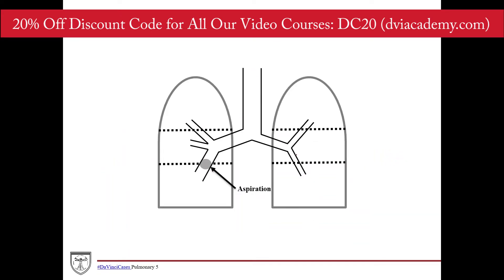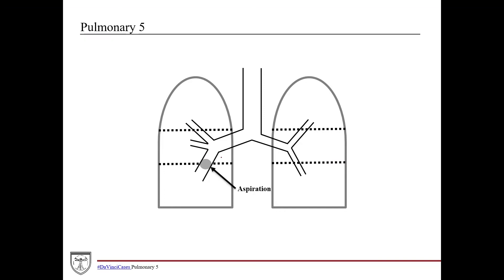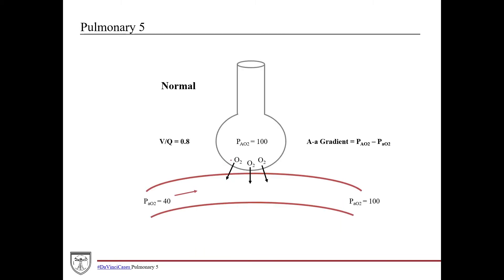An anatomical diagram shows the trachea, right and left main bronchus, and the zones for perfusion and ventilation. The left lung has two lobes but still three zones; the right lung has three lobes each with its own bronchus. In our patient, aspiration causes a blockage of the bronchus going to the right lower lobe.